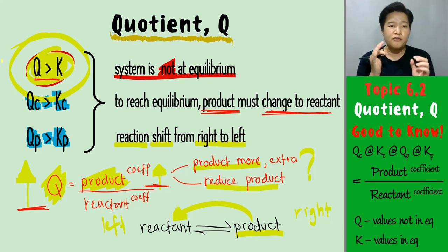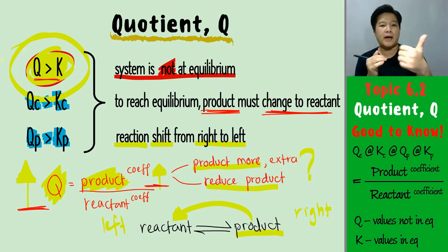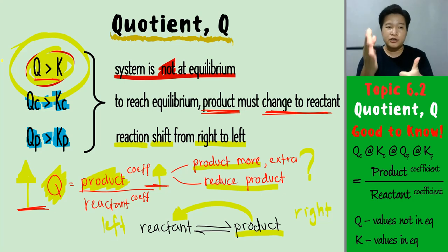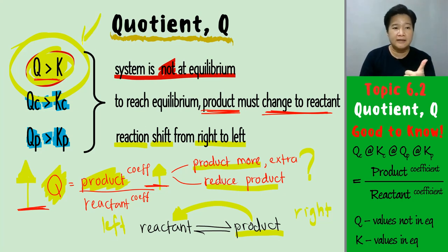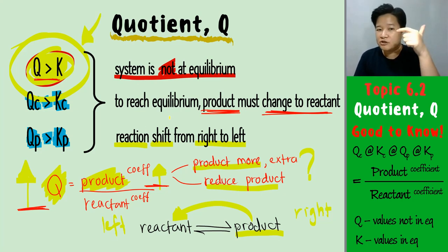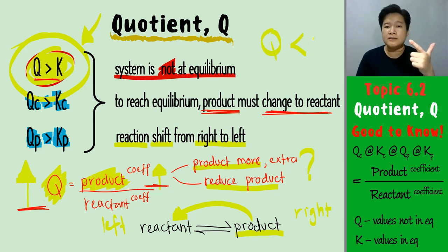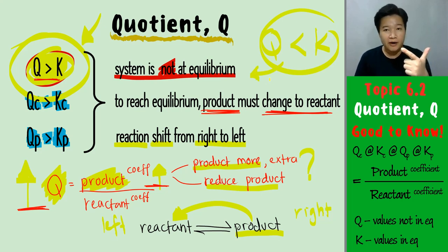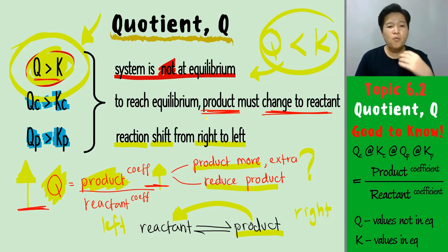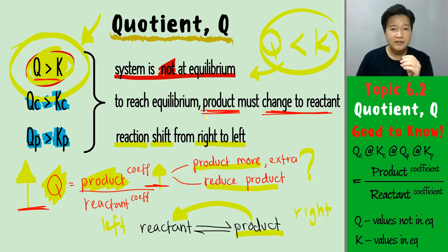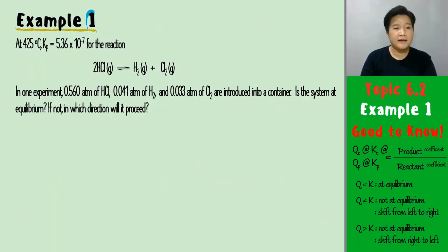To summarize the three conditions: Q equals K means the system is at equilibrium; Q larger than K means not at equilibrium and the reaction shifts right to left; Q smaller than K means not at equilibrium and the reaction shifts left to right. Now let's try some examples.